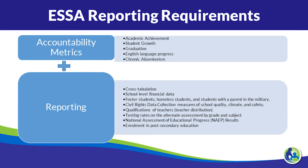ESSA has a number of reporting requirements. We've talked a bit about the accountability metrics. There are also reporting requirements that we are required to post and have available for the public to view. One example of a new reporting requirement is cross-tabulation, where you can look at data from a number of perspectives and see relationships based on multiple factors — for example, graduation rates by race and income status.